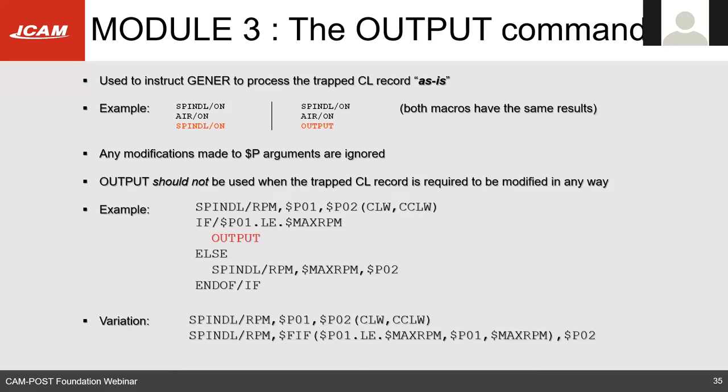The output command is used by Jenner to process the SDL line as-is. For example, if you're catching spindle ON and say OUTPUT, it will just output the spindle on command. However, if you have $P arguments associated to that SDL line and you modify a $P value, the OUTPUT command will not reflect those changes. So if you want to change the spindle value, use the second method — explicitly recall the command in the macro body.